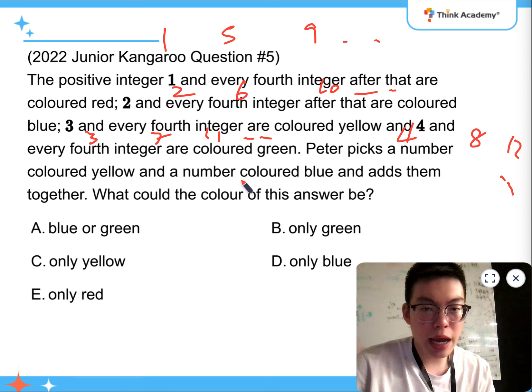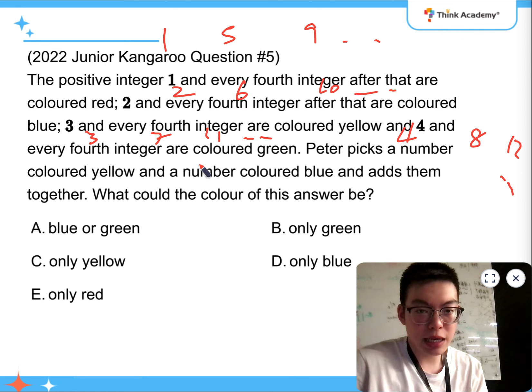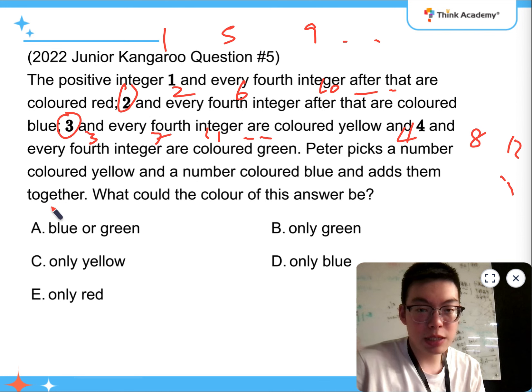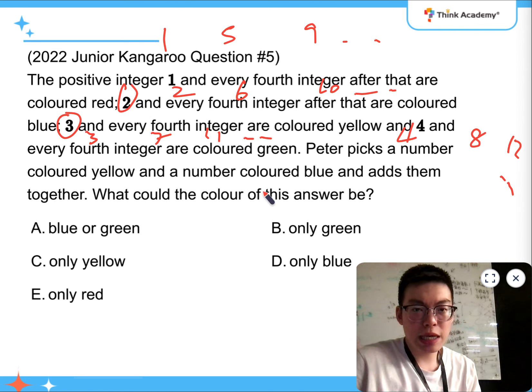And now, a yellow one and a blue one, adding them together, which means yellow one, blue one. That's a red one. Yellow one, blue one, adding them together. So, what could the colour be?